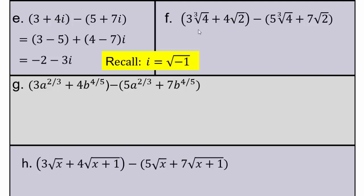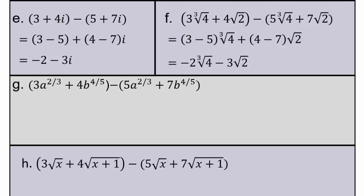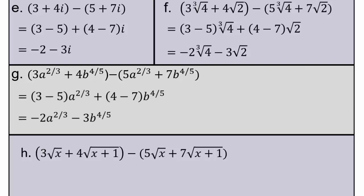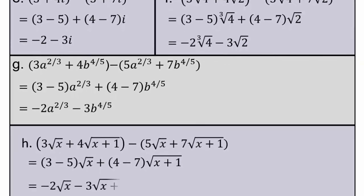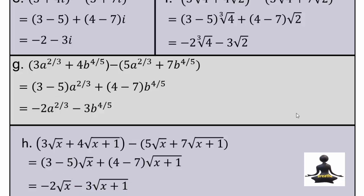For problem f: 3∛4 + 4√2 minus (5∛4 + 7√2). This gives (3−5)∛4 + (4−7)√2, which is −2∛4 − 3√2. Similarly for the remaining problems: −2a^(2/3) − 3b^(4/5), and −2√x − 3√(x+1). All answers share the pattern of negative 2 of something and negative 3 of something else — that's the similarity we notice.